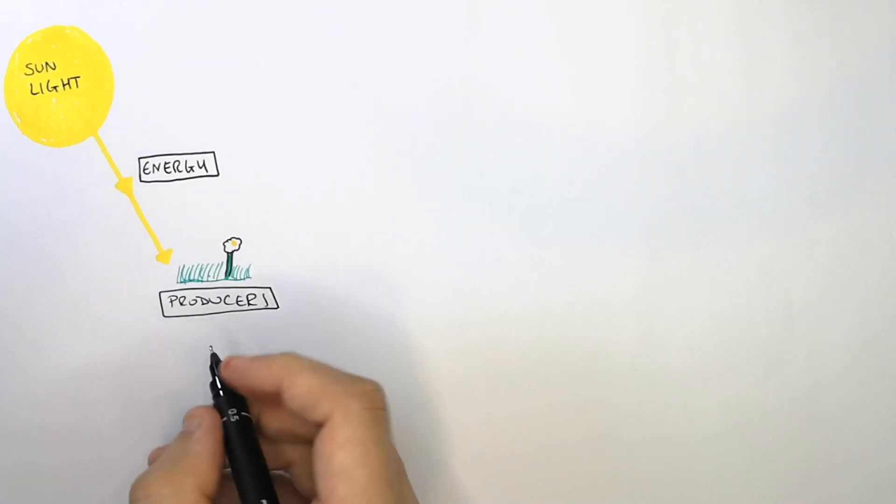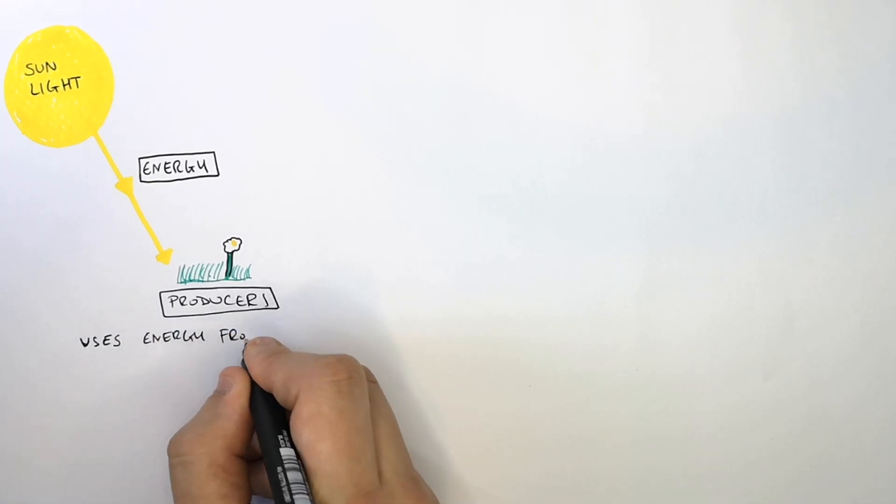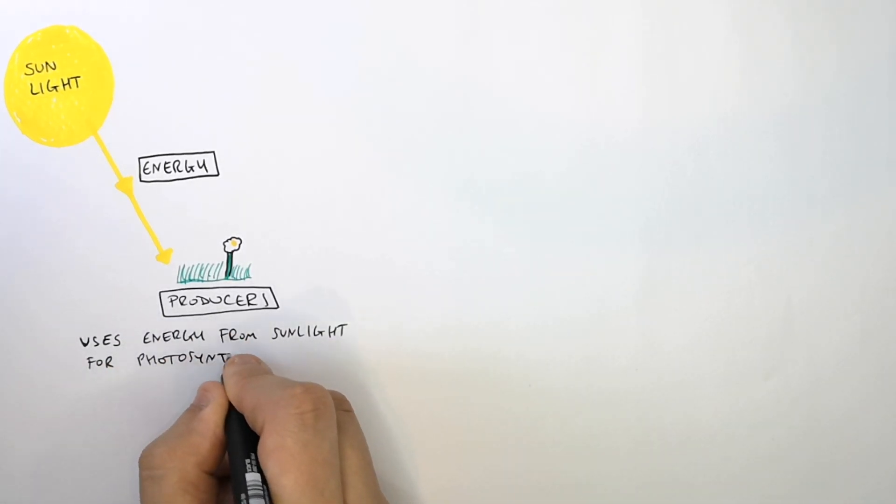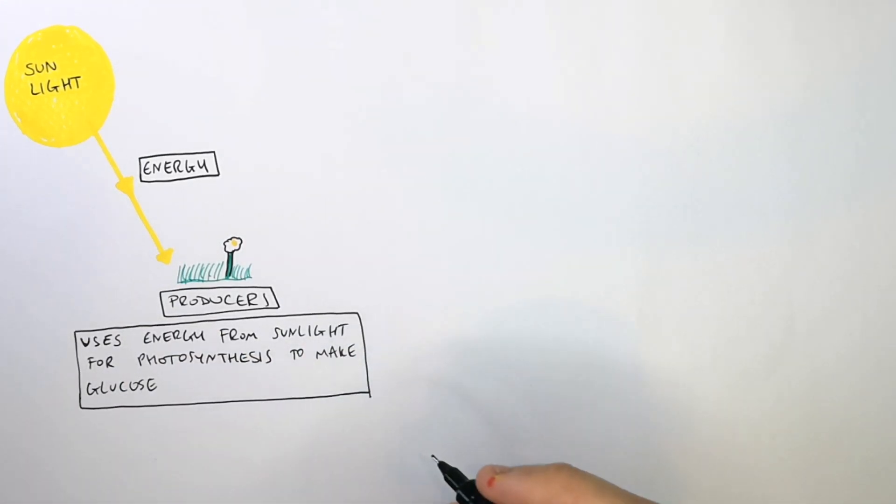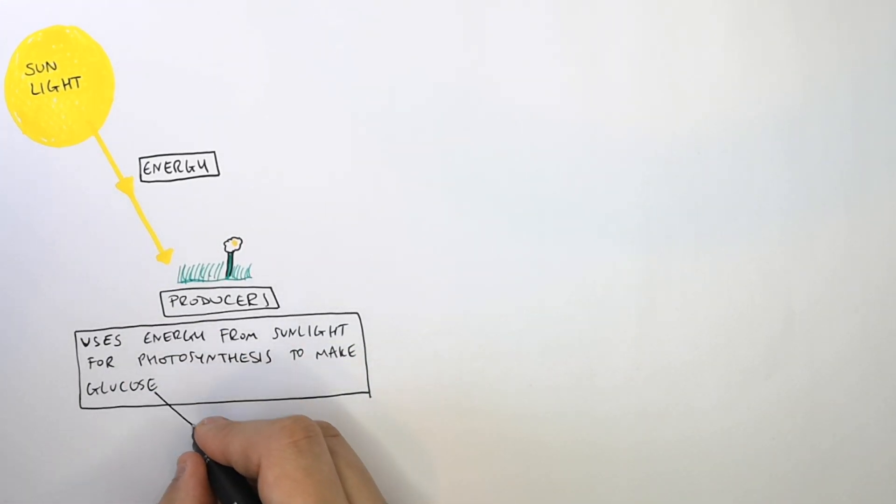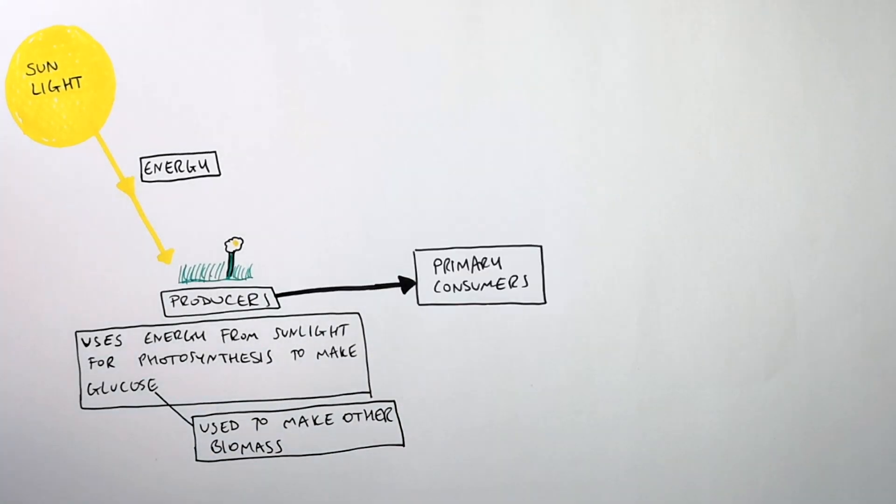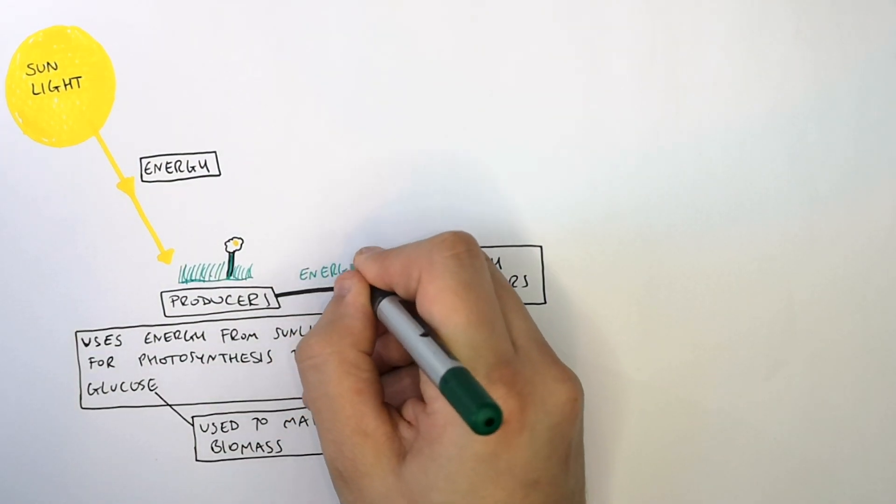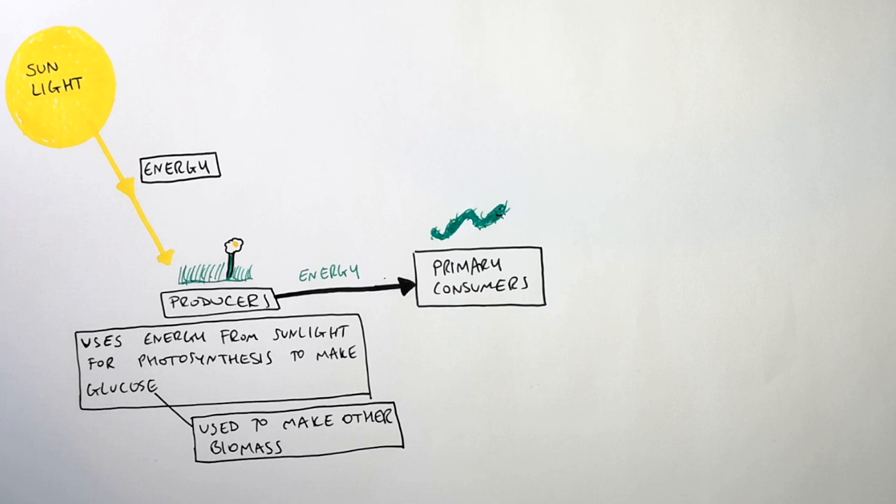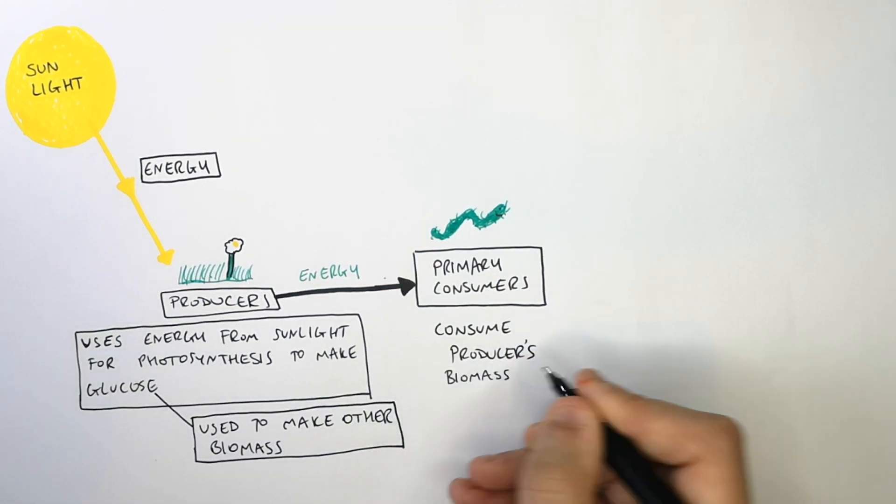We are now going to draw a food chain. So energy from the sunlight is transferred to a plant for photosynthesis whereby glucose is produced. And this glucose is used for respiration but it's also used to make other biomass in the plant. So the primary consumer is going to eat the producer whereby there is an energy transfer from the producer into the primary consumer. The primary consumer is going to consume the producer's biomass where the energy is stored.